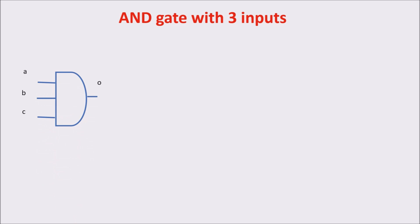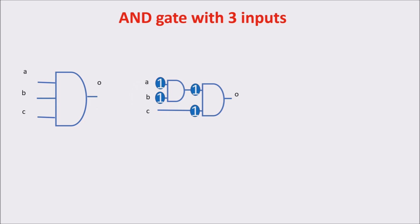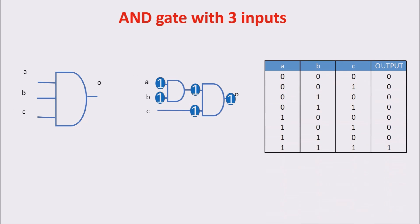At this point, we can forget the transistor and work only with logic gates. First, we build an AND gate with three inputs — it's very easy, we just need two-input AND gates. In order to have 1 on the output, all the inputs have to be 1. The truth table confirms: the output is 1 only if all three inputs are 1.